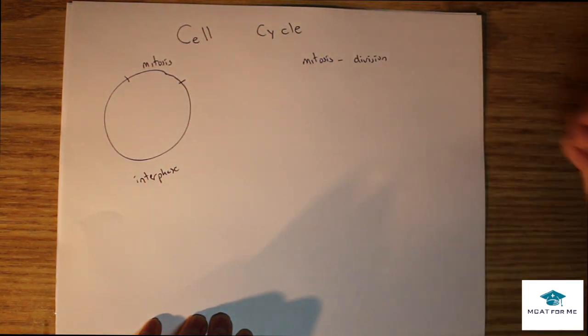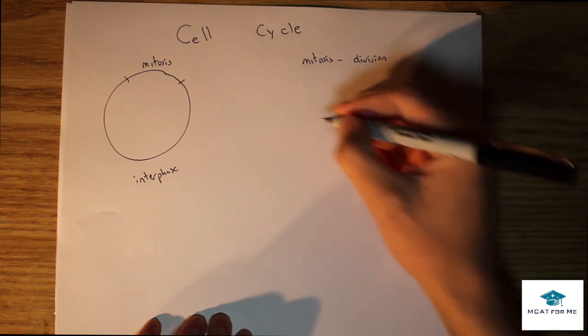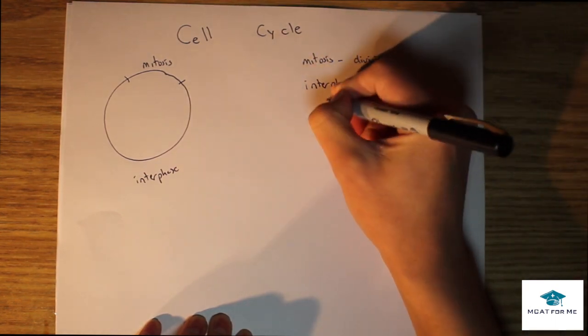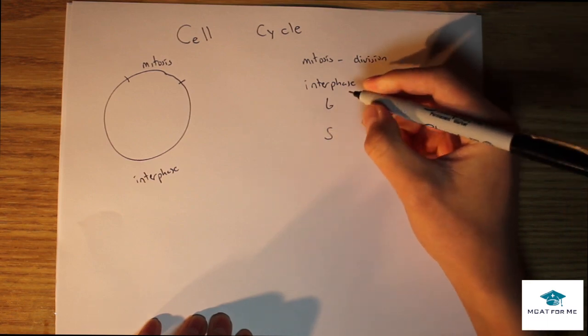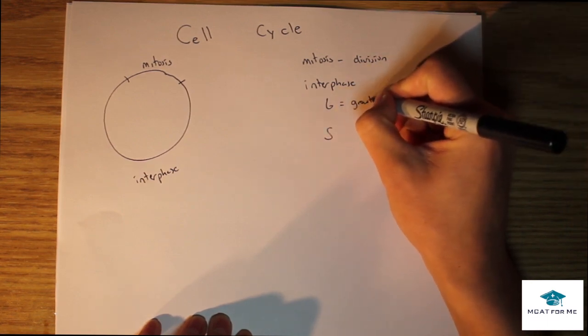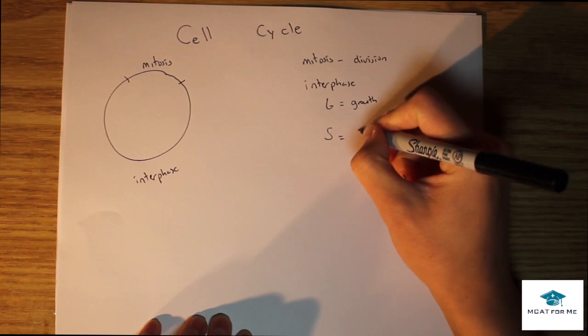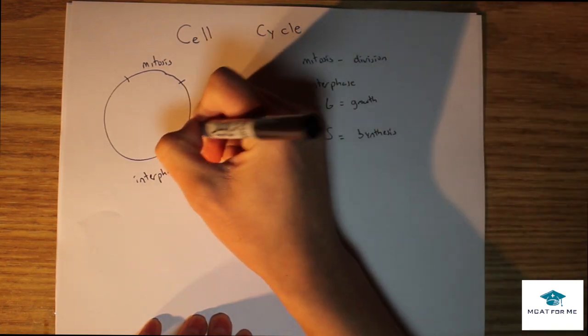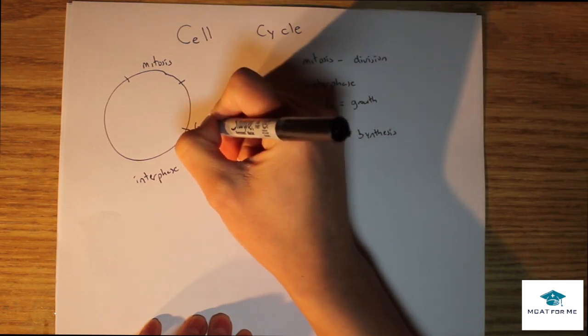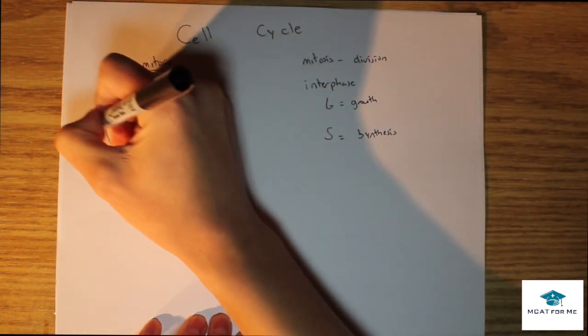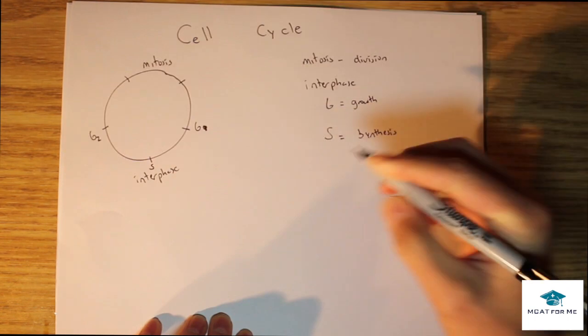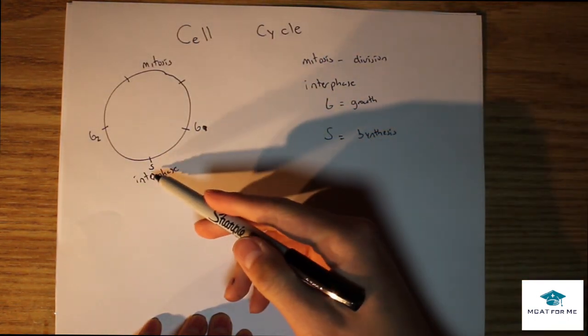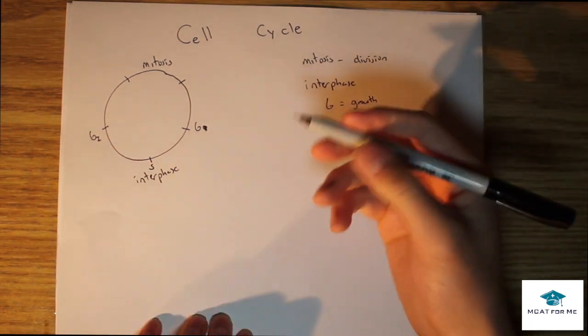Interphase is actually when we're growing. The interphase is broken down into the G and also the S. G stands for growth and S stands for synthesis or DNA synthesis. We have a G1, an S, and a G2.